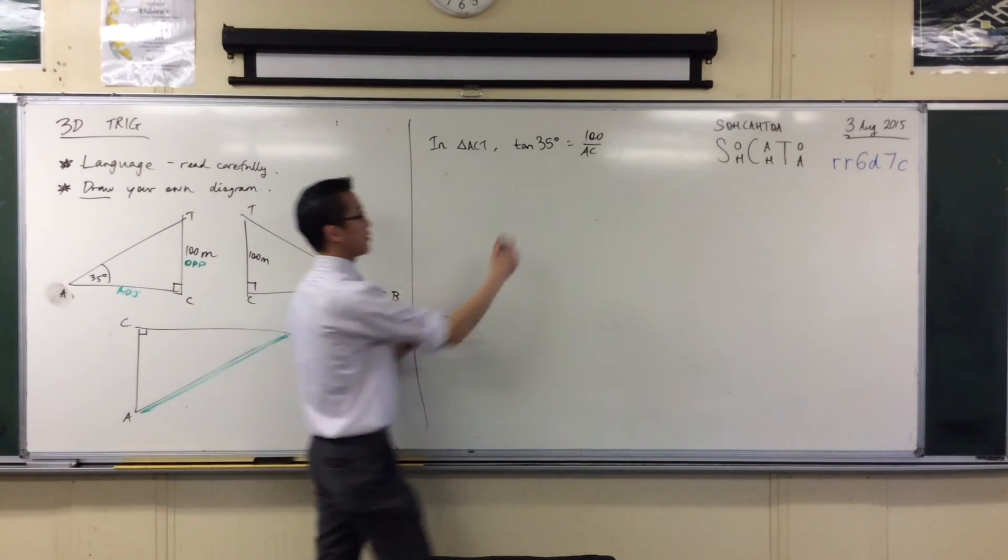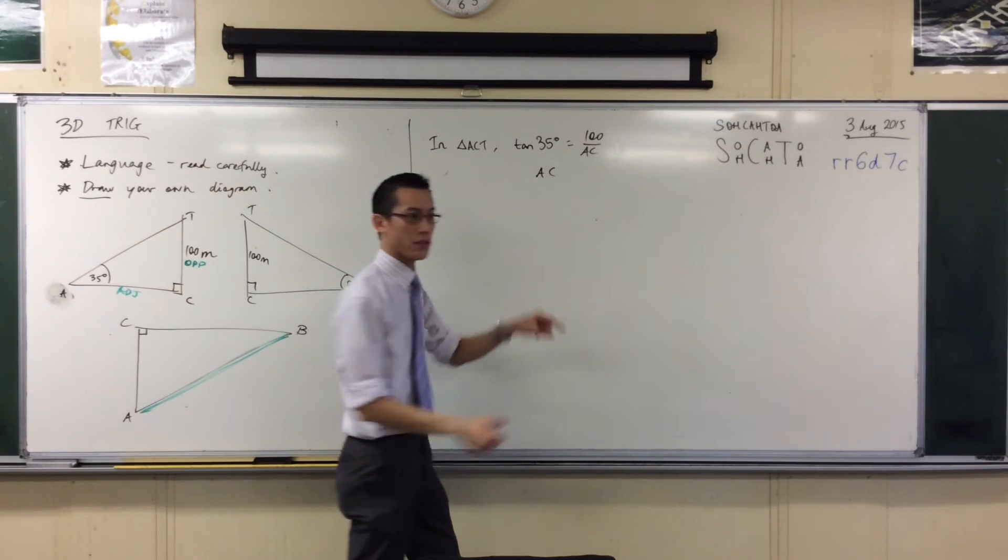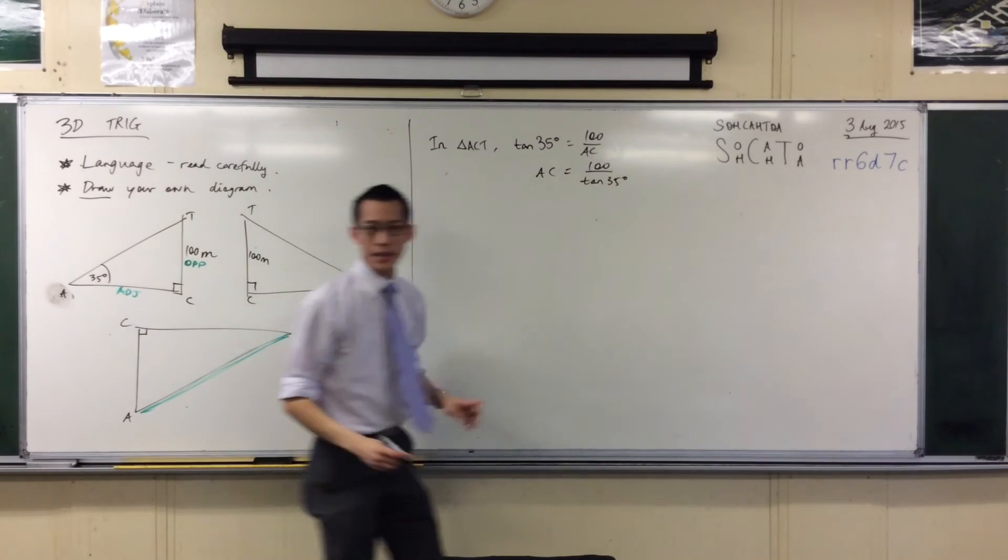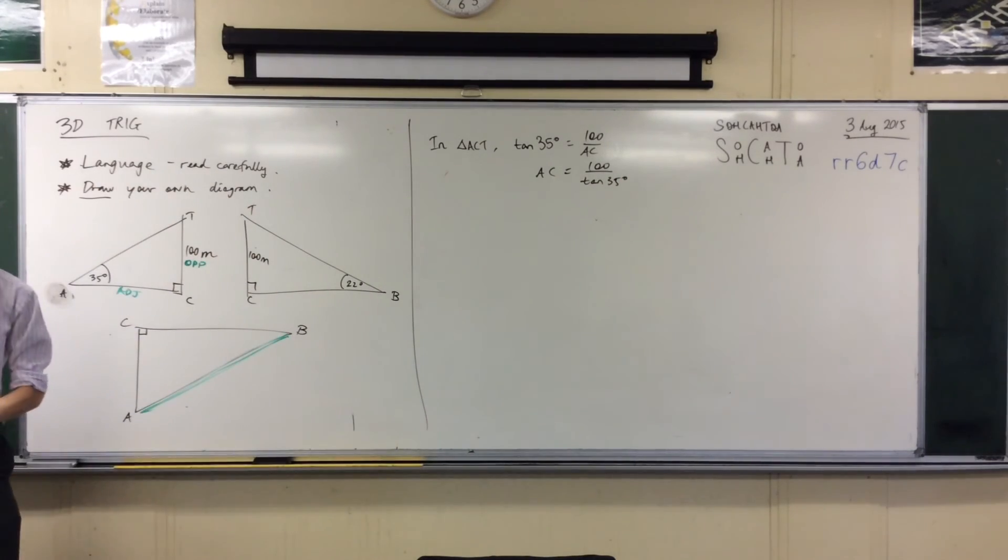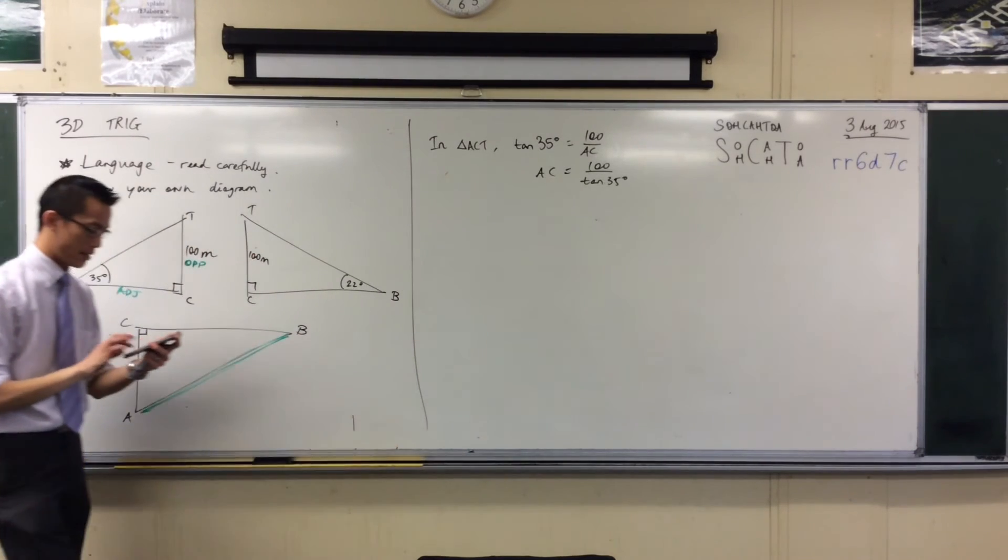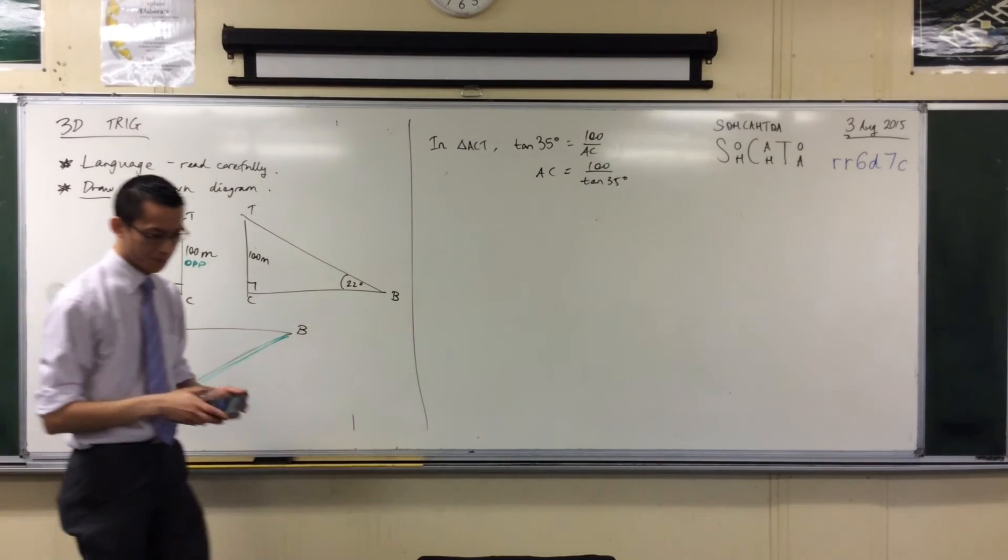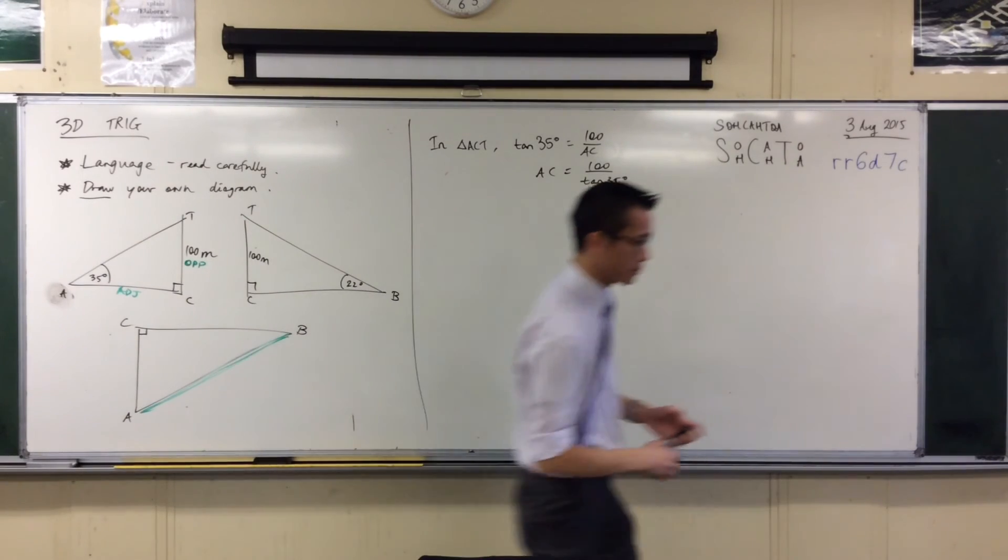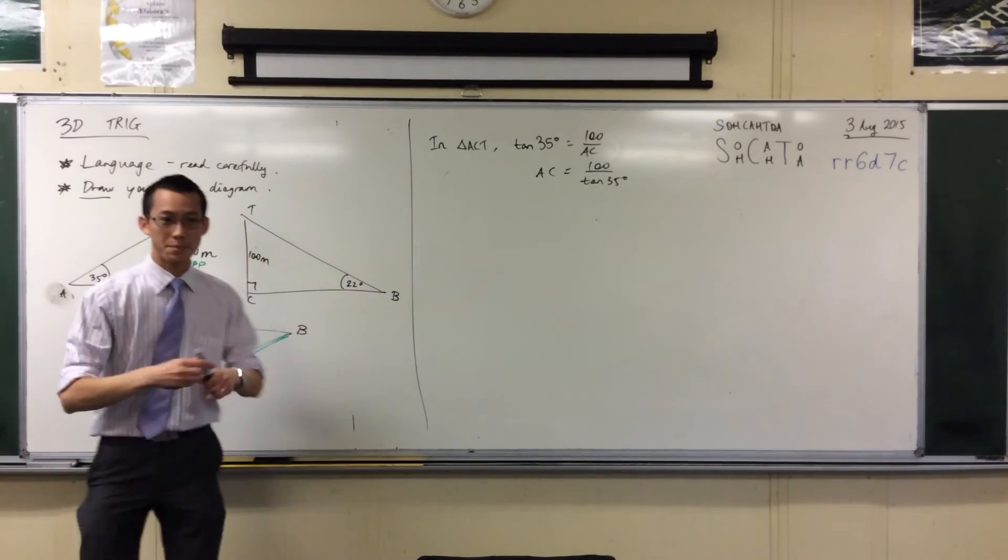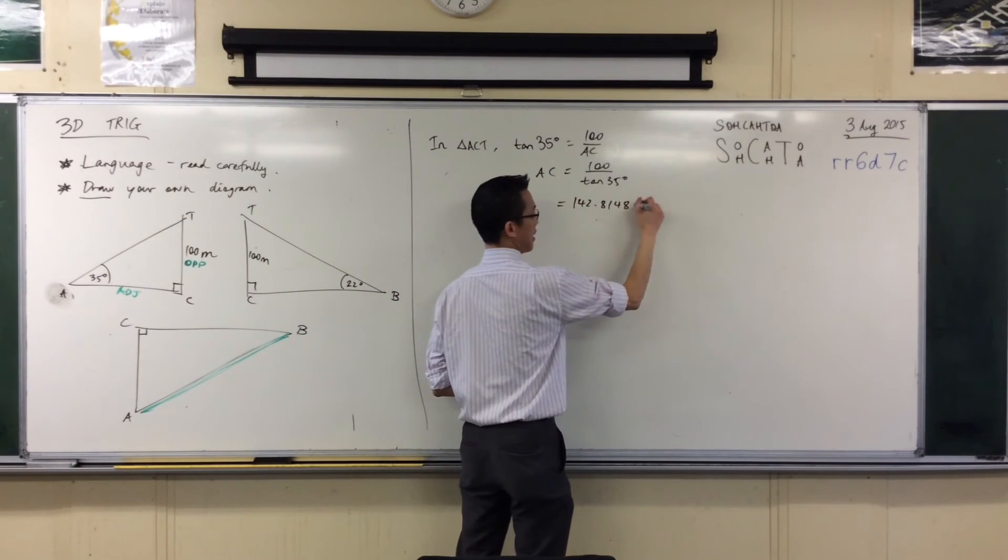100 over AC. I want just AC by itself, so I'm going to multiply that across, and then divide by tan 35, get him over the other side. Okay, here's an answer. Right? Now, reach for your calculator, reach for your calculator, and let's actually just calculate this angle, rather this side. 100 divided by tan 35. Okay, you got a number for me? What do we get? Someone got it? Yeah? 142.8148. And it keeps going. Okay.